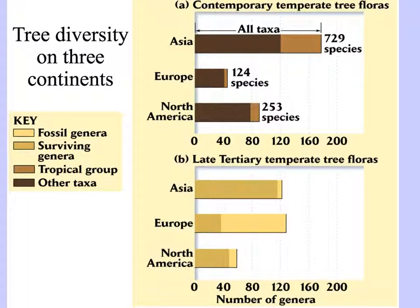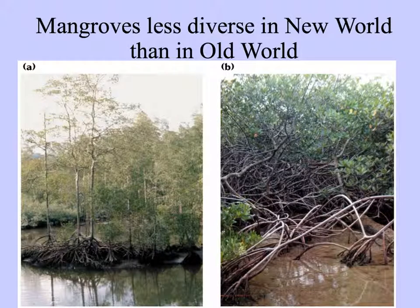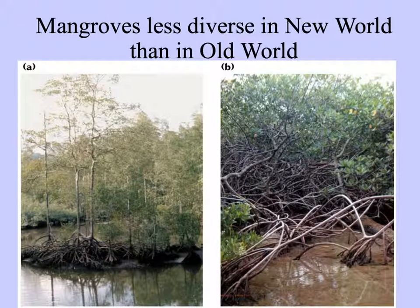In the present day, the tree flora of Asia is much larger than that of Europe or North America, but it wasn't always that way. If we look at the three continents in the late Tertiary, Europe had the greatest number of tree species — many of them now present only as fossils. We think of Florida as having many mangroves, but in the New World coastal tropics, mangroves are less diverse than in the Old World. Tomlinson defines mangroves as salt-tolerant woody species, and there are many more such plants in the Old World.